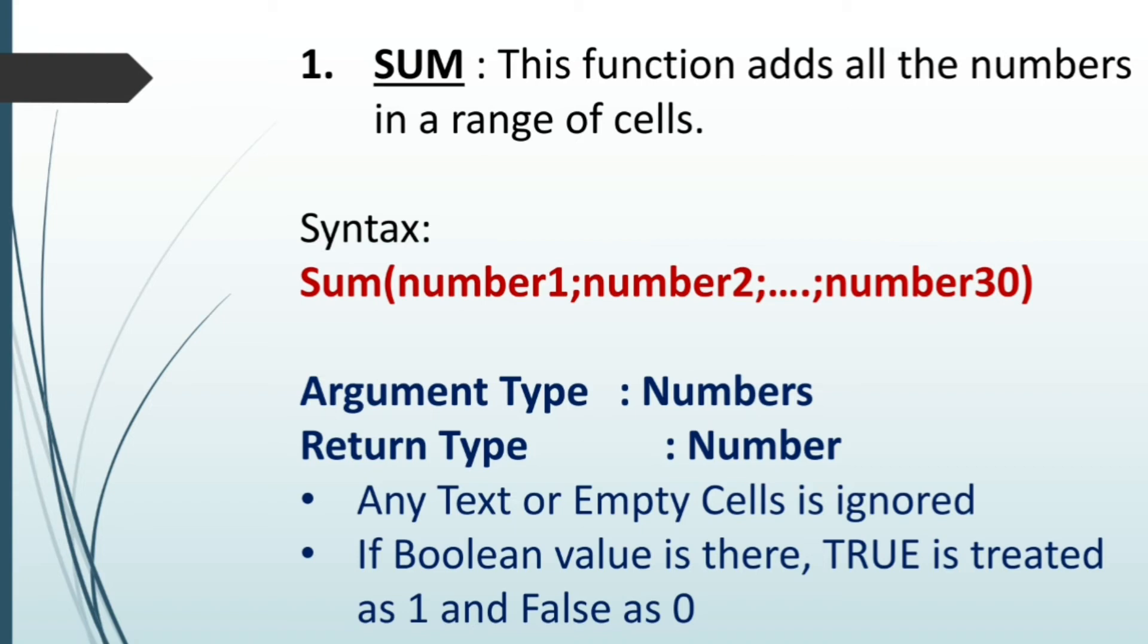And if boolean value is entered as an argument, true is treated as 1 and false is treated as 0. We know that boolean value is a value which is either true or false. So if it is true, it is treated as 1 for the calculations. And if it is false, 0 is treated for the calculations.